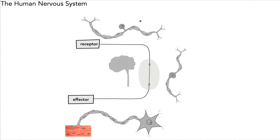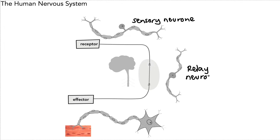This diagram shows the neurons in a little bit more detail. This is our sensory neuron — that's the one we showed here. This is our relay neuron, found in the central nervous system. And this is our motor neuron, going to the effector.